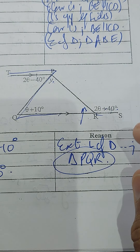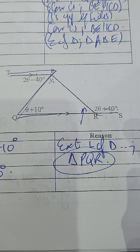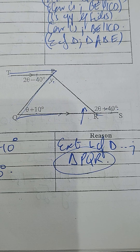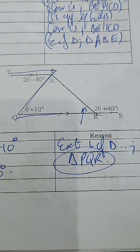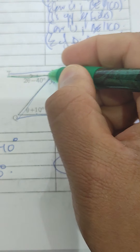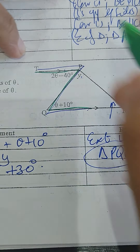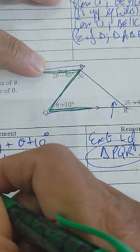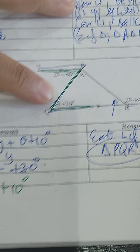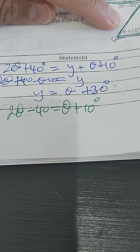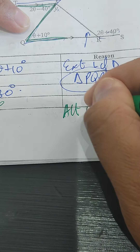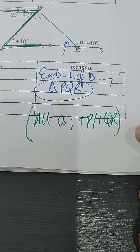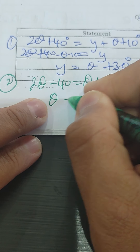The second part of the question says calculate the size of theta. You must set up an equation. You can see that the alternate angles give us: 2 theta minus 40 is equal to theta plus 10. The reason for that is the fact that it's alternate angles.